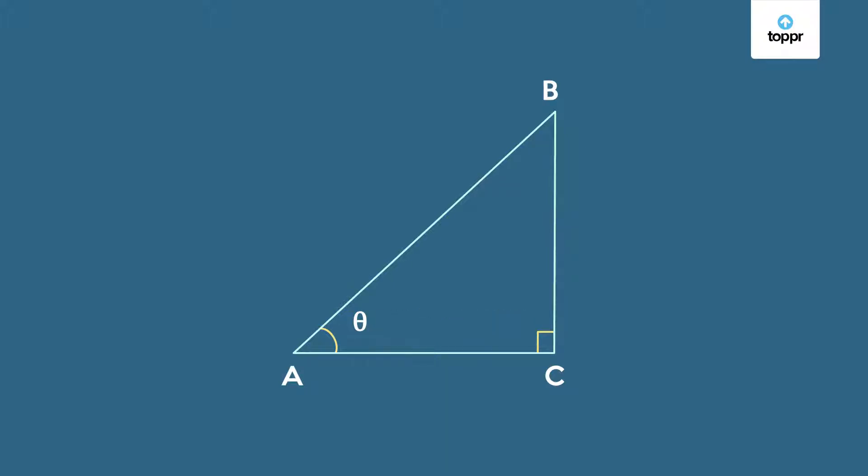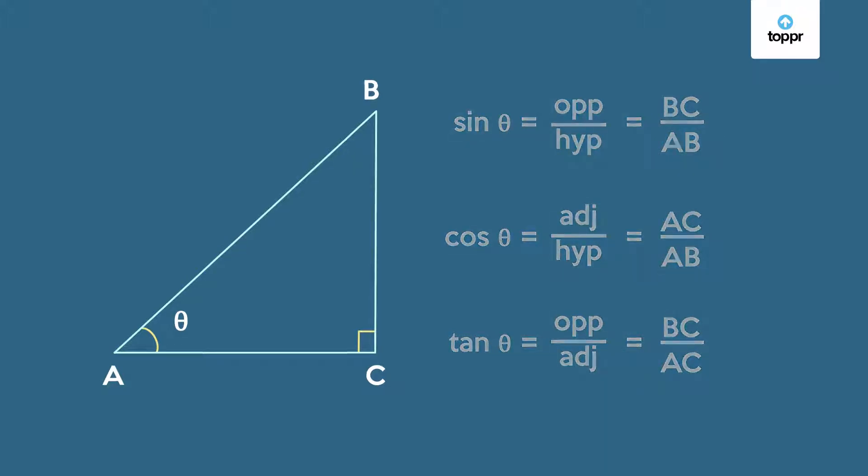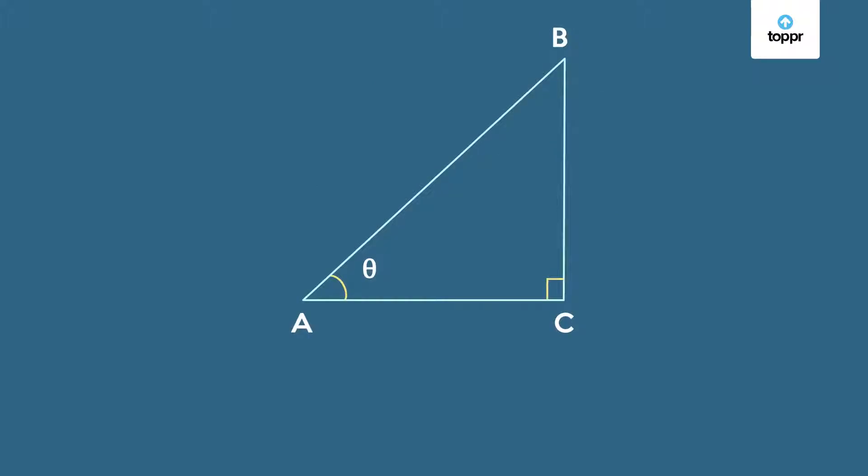We already know that in a right angle triangle ABC the sine, cosine, and tangent of an acute angle theta are defined as shown here. Now let's change this triangle by making theta smaller and smaller.